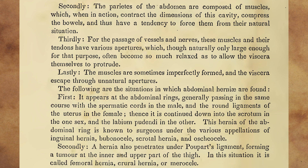The following are the situations in which abdominal hernias are found. First, it appears at the abdominal rings, generally passing in the same course with the spermatic cords in the male and the round ligaments of the uterus in the female. Thence it is continued down into the scrotum in the one sex and the labium pudendi in the other. This hernia of the abdominal ring is known to surgeons under the various appellations of inguinal hernia, bubonocele, scrotal hernia, and oscheocele. Secondly, a hernia also penetrates under Poupart's ligament, forming a tumour at the inner and upper part of the thigh. In this situation it is called femoral hernia, crural hernia, or merocele.